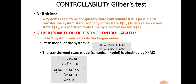We are analyzing Gilbert's test with two cases. Case one is where the system matrix A has distinct eigenvalues. Case two is where the eigenvalues have multiplicity, meaning eigenvalues are repeated. So first is Case one, where the system matrix has distinct eigenvalues.